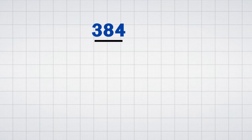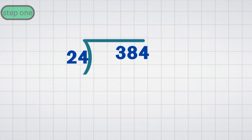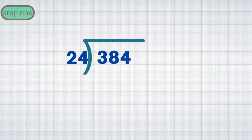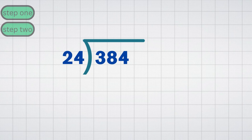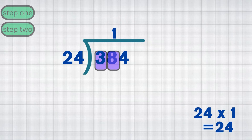Example 2: 384 divided by 24. Step 1: Set up the long division. 384 is the dividend; 24 is the divisor. Step 2: Divide the first two digits. Look at 38, the first two digits of 384. 24 fits into 38 one time, because 24 multiplied by 1 equals 24. Write 1 in the quotient above the 8 in 384.